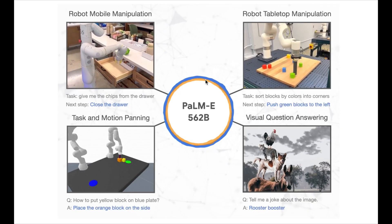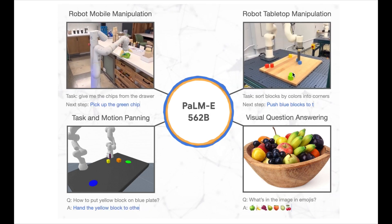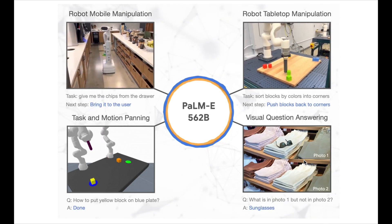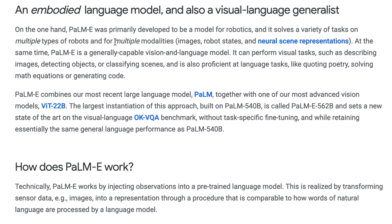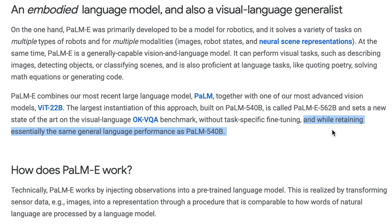You can perform lots of different tasks — like getting your chips in an autonomous fashion, sorting blocks based on colors, and answering questions about images. The big innovation of this model is that you can use multiple modalities: images, robot states, and neural scene representations. This model set a new record on the OKVQA benchmark, and it was able to do it without task-specific fine-tuning, while retaining essentially the same general language performance of the PaLM model.